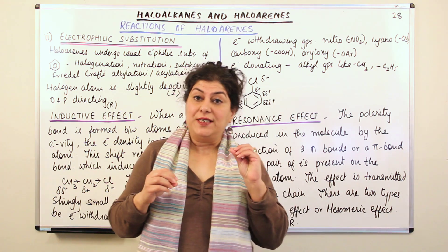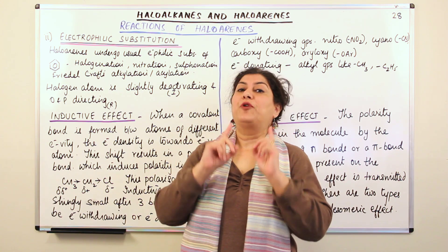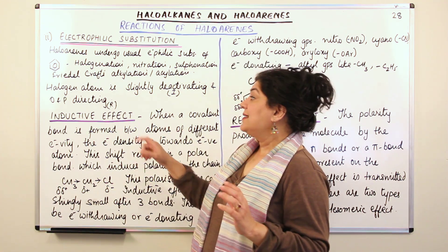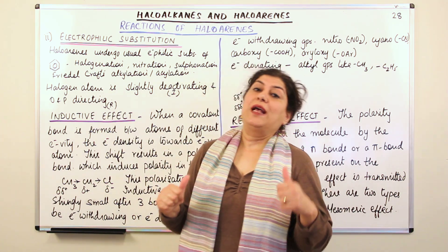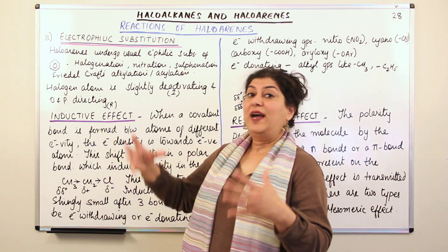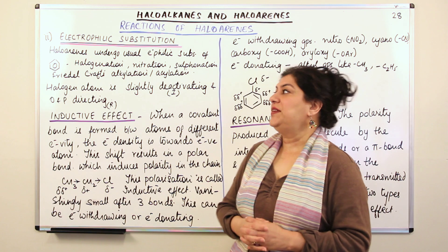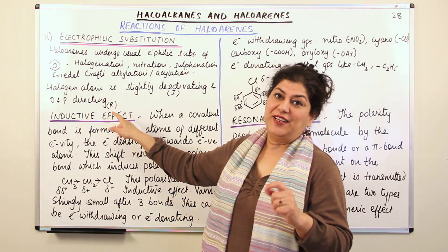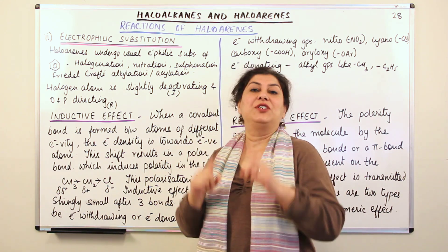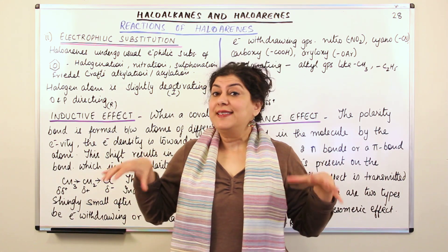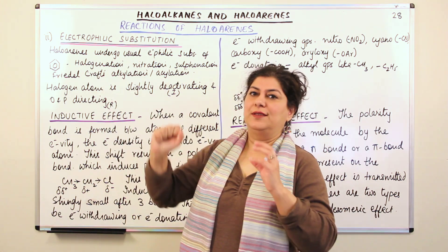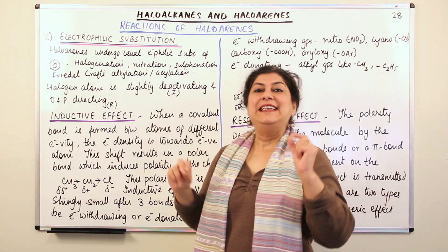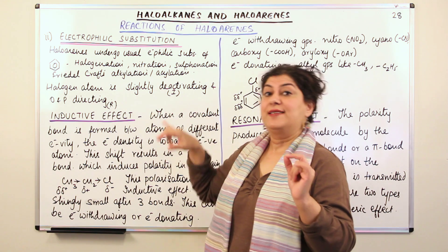The halogen atom is slightly deactivating and it is ortho and para directing. It is deactivating due to inductive effect, which can explain its deactivating behavior. And it is ortho and para directing due to resonance effect, which can explain why it directs to ortho and para positions. Inductive effect and resonance effect are effects you have studied in class 11, and this will be a very good time to revise them. Once you understand them, it becomes very easy to understand why electrophilic substitution takes place in a certain way.